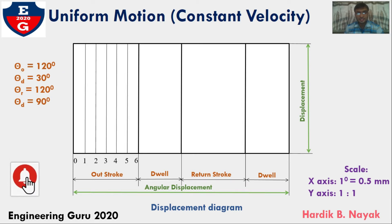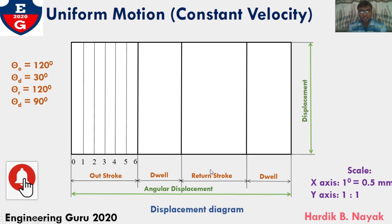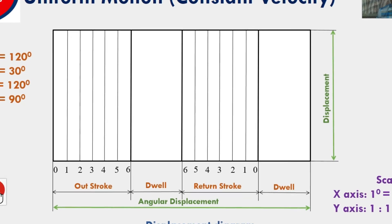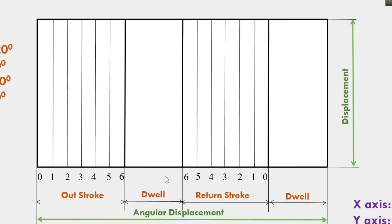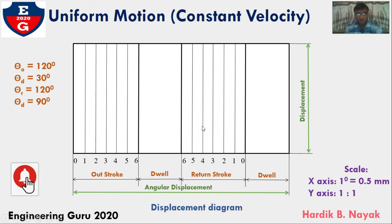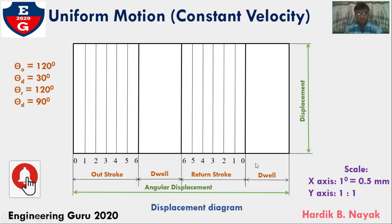Here I am taking 30 degrees and not dividing it because during dwell the follower neither moves upward nor downward. After dwell there would be return stroke — that is 120 degrees — again dividing this return stroke into 6 equal parts. For simplicity I would be keeping the same notation in reverse direction: 6, 5, 4, 3, 2, 1, 0. Draw projected vertical lines through all points. After return stroke, the angle turned by cam is 120 degrees; during return stroke the follower would reach its original position. After return stroke, the final dwell is 90 degrees, shown by a broken line.